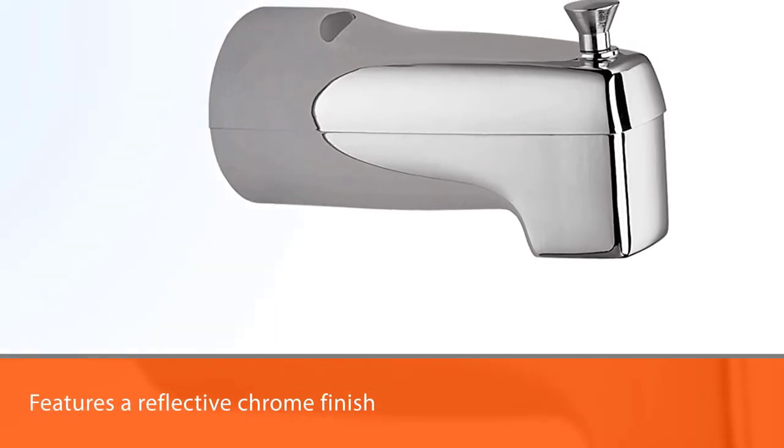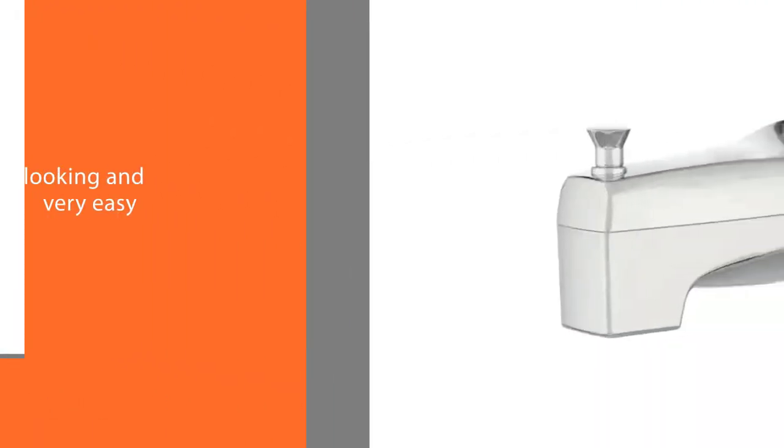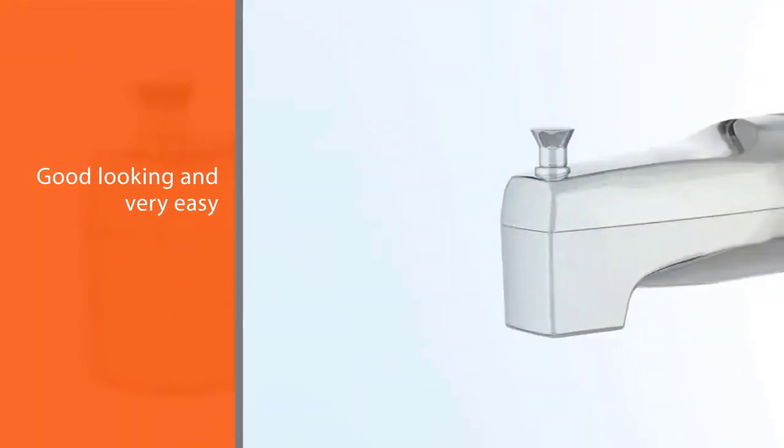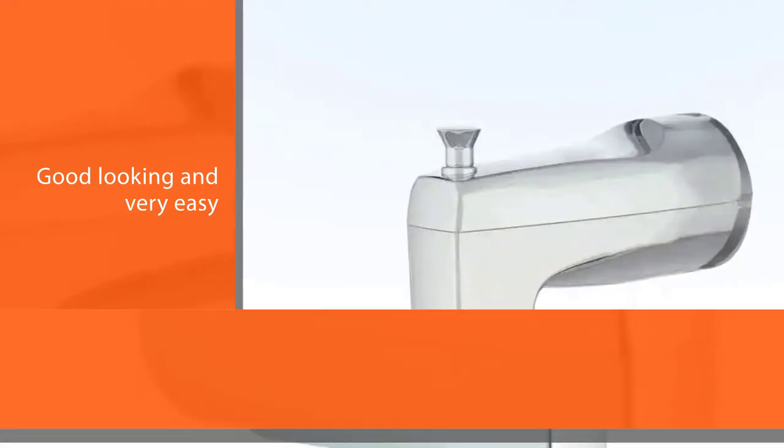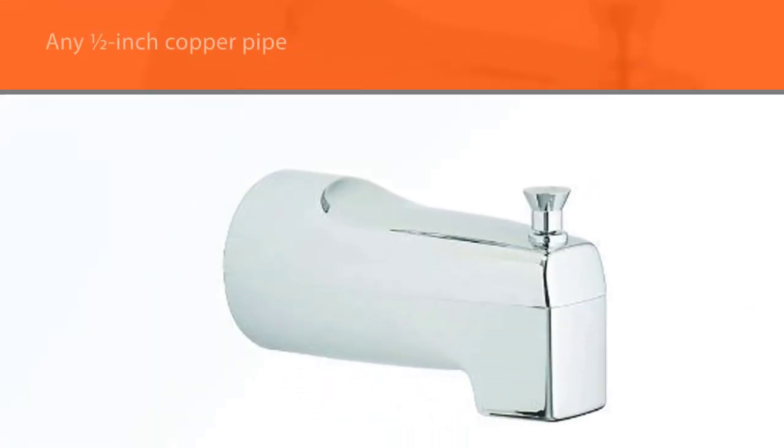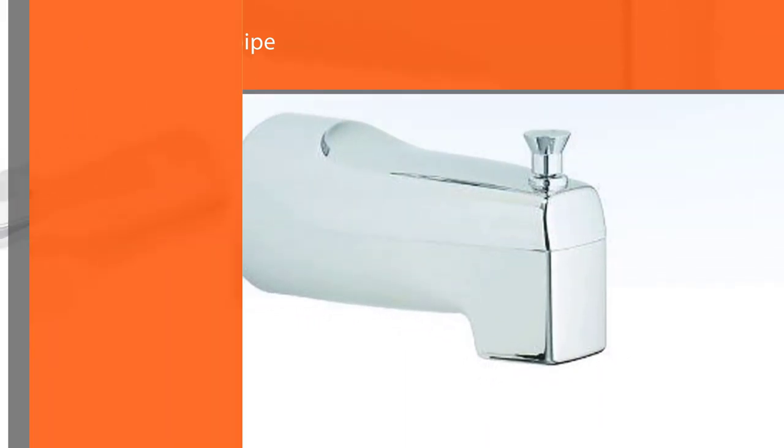During our test, we discovered that its installation is very easy thanks to its O-ring seal that keeps it locked in any half-an-inch copper pipe. It is designed to be mounted on the wall, thus there is no need to worry about holes on the tub since the two will not make contact.